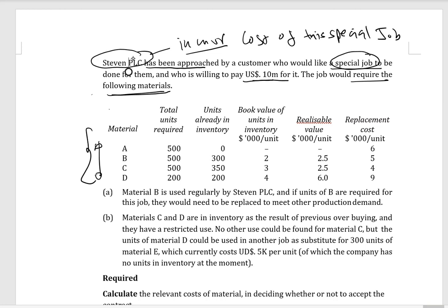If the calculated cost of the job is higher than the special offer, then this offer should not be accepted — it is not worthwhile. If the calculated cost is less than the offer price, then this will be a worthwhile project. So this is what we are going to identify.